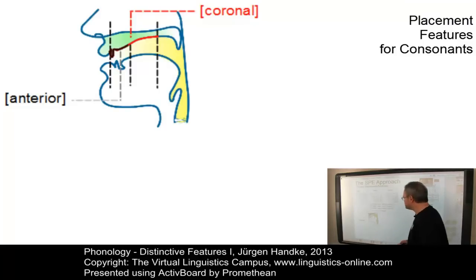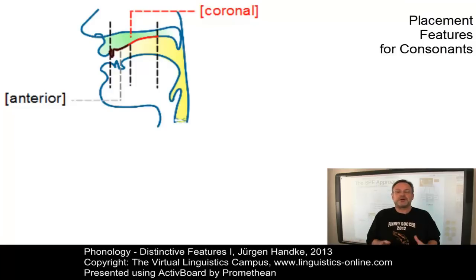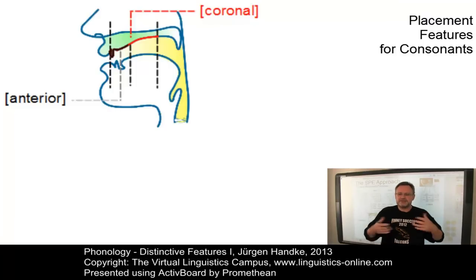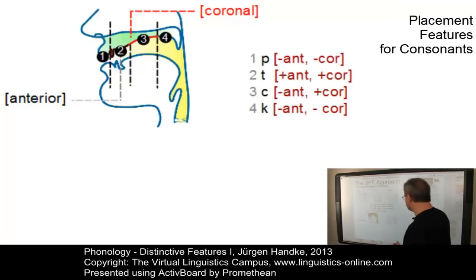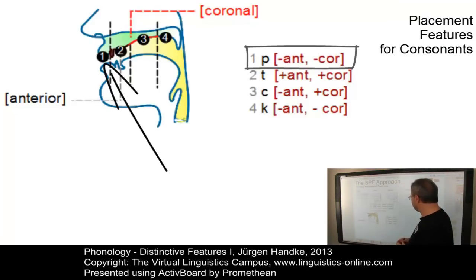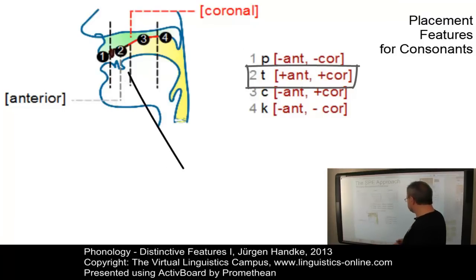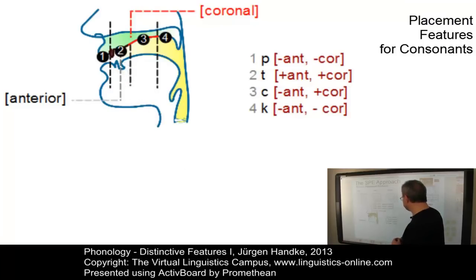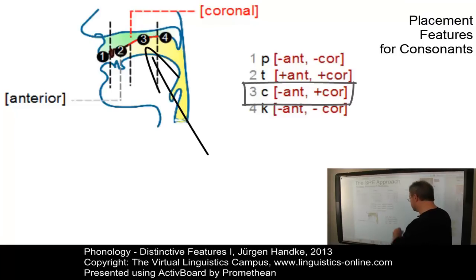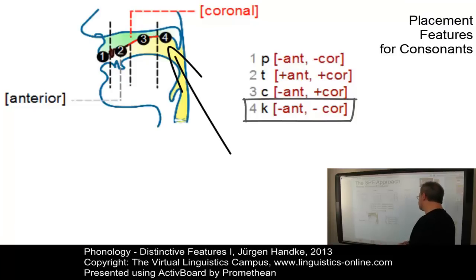The feature anterior is associated with all those coronal consonants produced with a primary constriction located at or in front of the alveolar ridge — that is, labial, dental and alveolar consonants. For example: P would be defined as minus-anterior minus-coronal, as it is outside the coronal region; T is coronal and located in the anterior region; a palatal K is minus-anterior but still coronal; and a velar K is minus-anterior and minus-coronal.